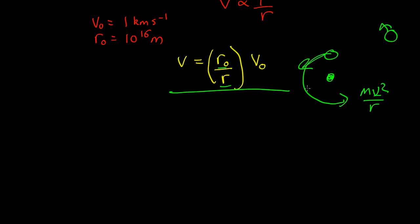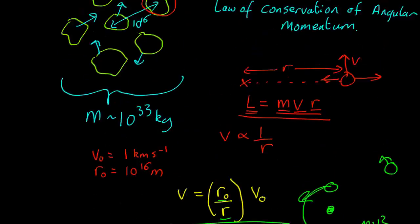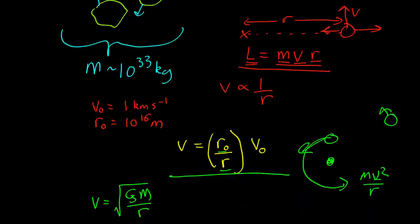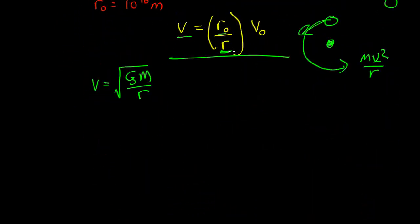Remember, if you balance gravity against centripetal force, you get the orbital speed, which is v equals root g m over r. So if something is going that fast, centrifugal force will balance gravity, and it won't fall in anymore. So we've got our blob up here, and it's falling in. As it falls in, it'll go faster and faster. So its velocity will go up as 1 over r, and eventually the velocity will reach the orbital velocity. At that point, it will be at equilibrium, the centrifugal force will balance gravity, and it won't fall in any further.